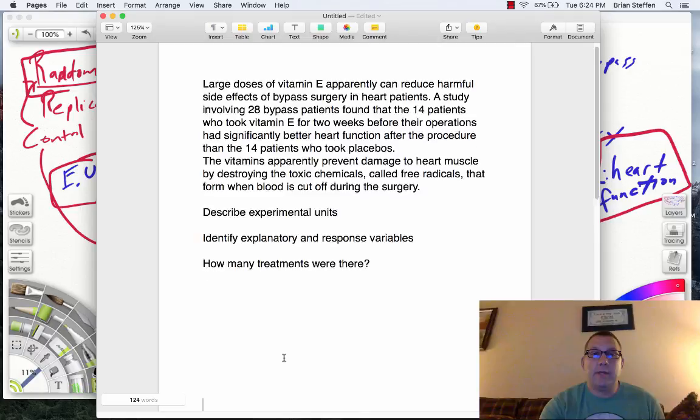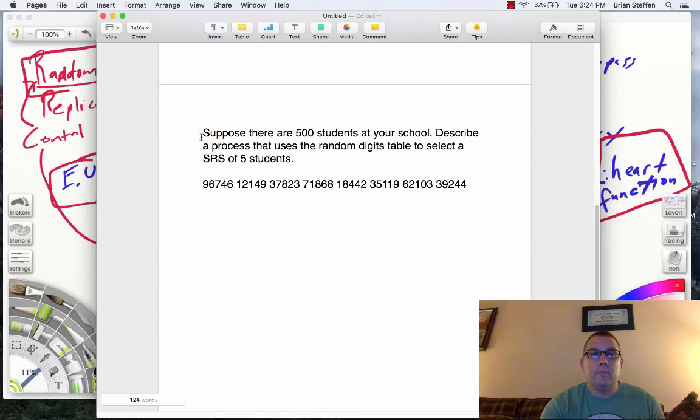Okay. Go back here. Let's go to the next problem. There it is. Suppose there are 500 students at your school. Describe a process that uses random digits, the random digits table to select a simple random sample of five students. All right. So there's my background information.